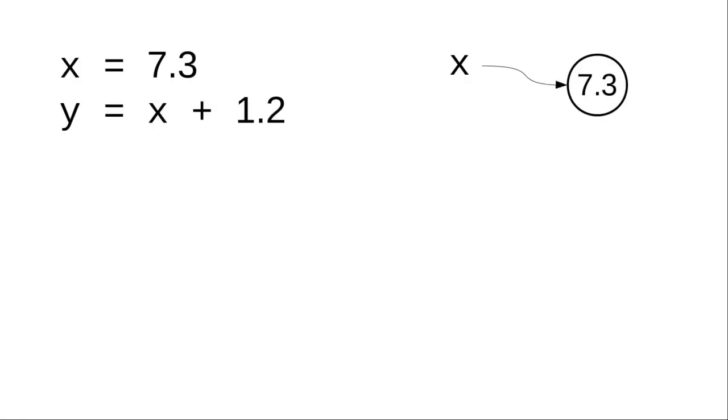What about using variables in further calculations? In this code, after the first statement is done, x refers to the value 7.3. In the second statement, y refers to x plus 1.2. We always, always, always start out with the right-hand side and figure out what it works out to.